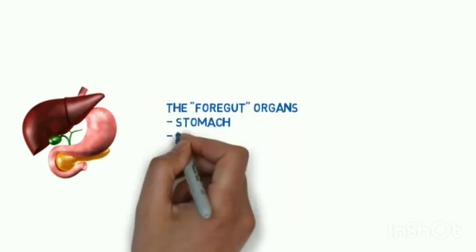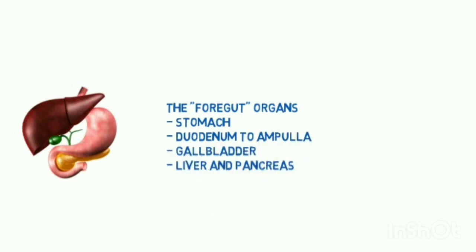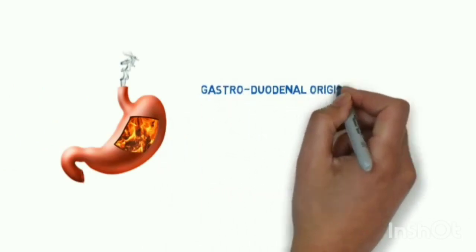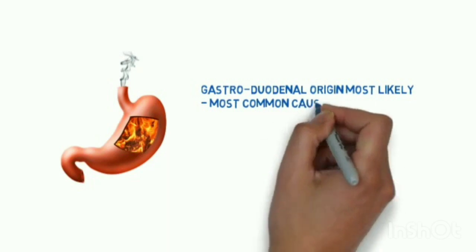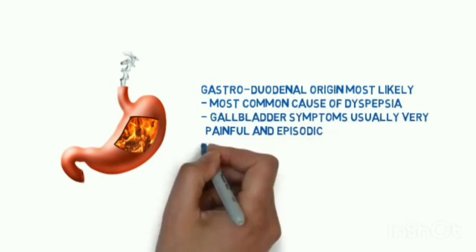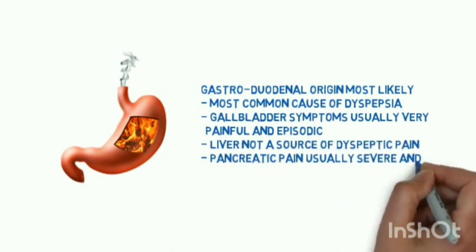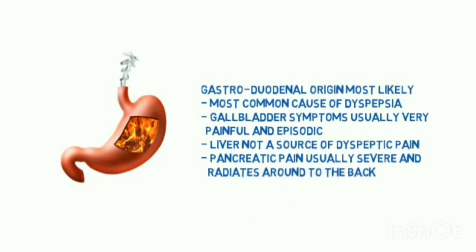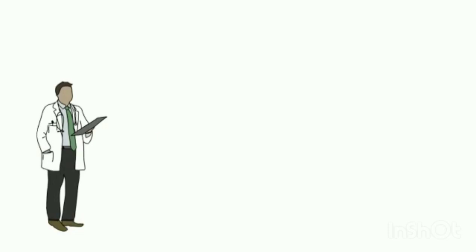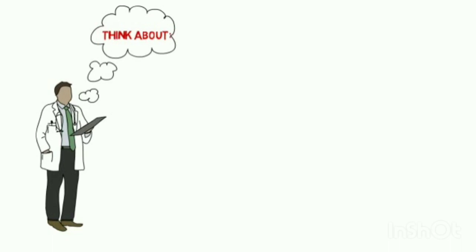The relevant organs are the stomach, duodenum up to the ampulla, gallbladder, liver, and pancreas. The most common cause of dyspepsia is gastric in origin. Gallbladder symptoms are usually very painful and episodic. The liver is not a source of dyspeptic pain. Pancreatic pain is usually very severe and radiates around the back.